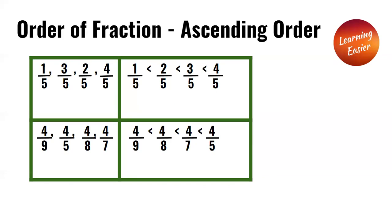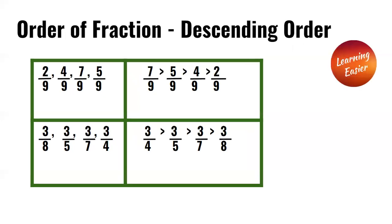Next, we have four over nine, four over five, four over eight, and four over seven. Since we have the same numerator, we compare the denominators. The smallest denominator gives the largest fraction, and the largest denominator gives the smallest fraction. So: four over nine is less than four over eight, which is less than four over seven, which is less than four over five.